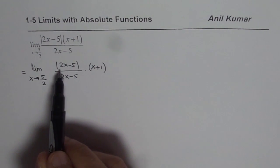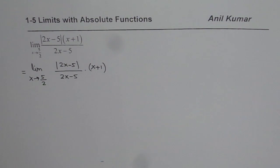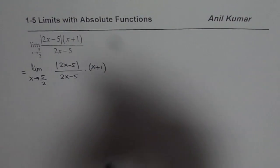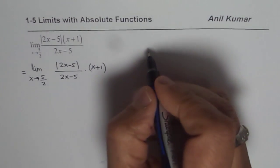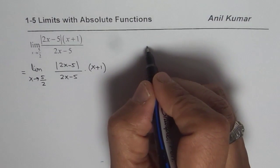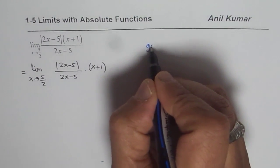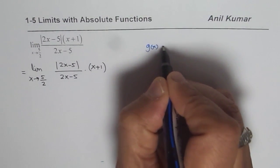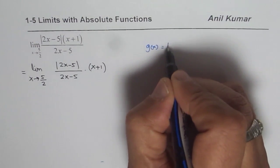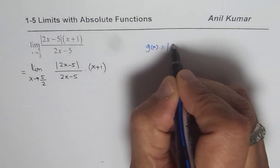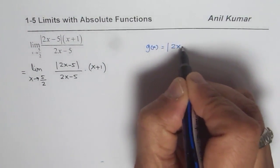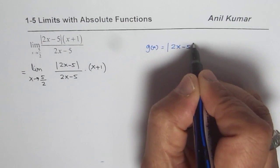How do you define absolute value of 2x minus 5? Let us define it on the right side and try to understand. Let us say this is our function g of x, which is absolute value of 2x minus 5.